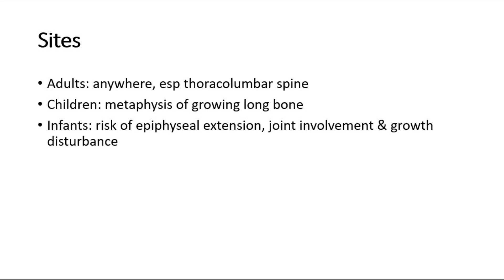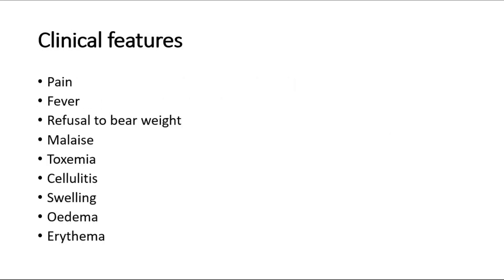The clinical features of acute hematogenous osteomyelitis are pain, fever, refusal to bear weight on the joint, and malaise. They may proceed to toxemia, and other features include cellulitis, swelling, edema, or erythema of the surrounding skin.